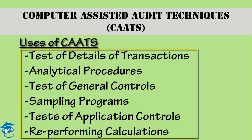Next comes the test of application controls. For example, if you want to test the functioning of a particular program control, you absolutely cannot do that through a manual system. Whether the program control is working perfectly or not, whether the functioning is done in an appropriate manner or not — for that you need to use Computer Assisted Audit Techniques. Only then will you be able to do that.